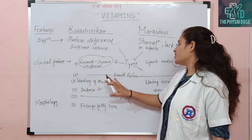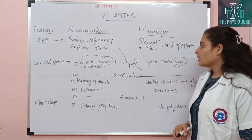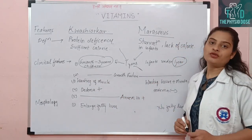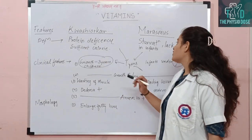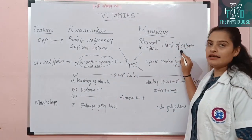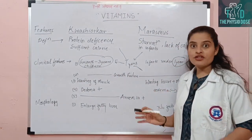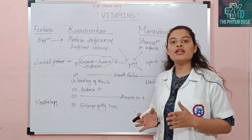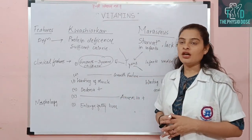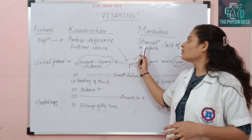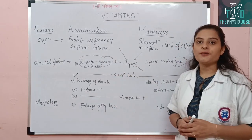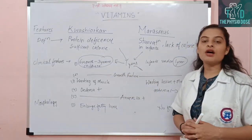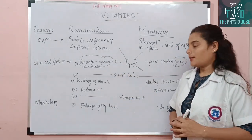In common, both conditions lead to growth failure. There is protein deficiency and calorie deficiency, and the body does not get what it needs. So growth failure is common to both Kwashiorkor and Marasmus.